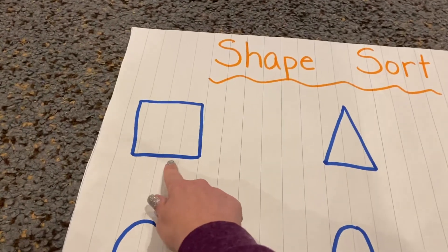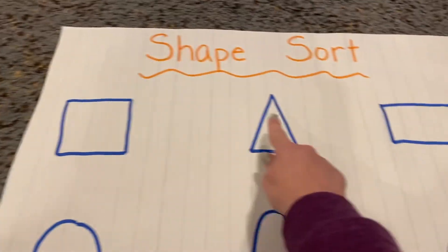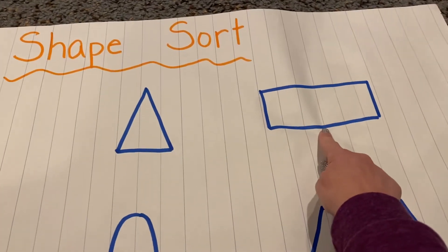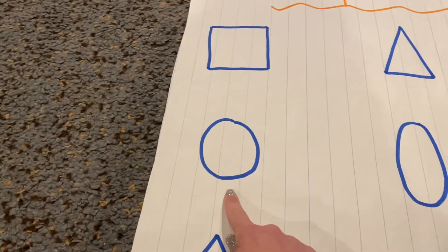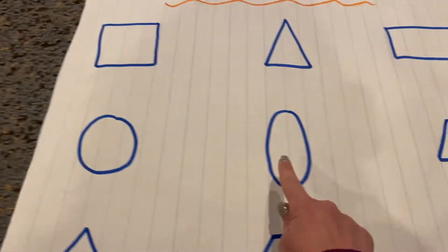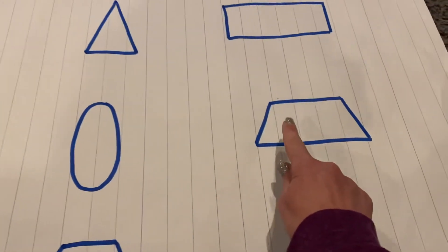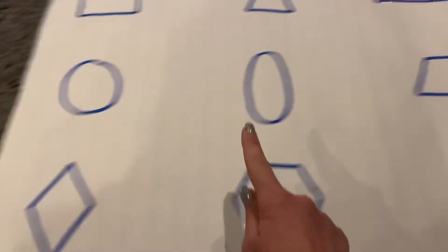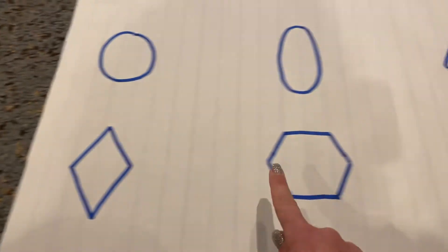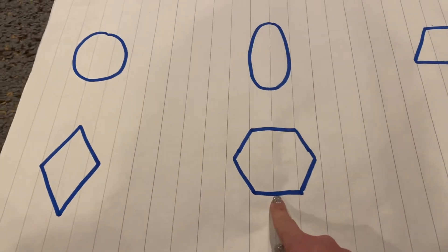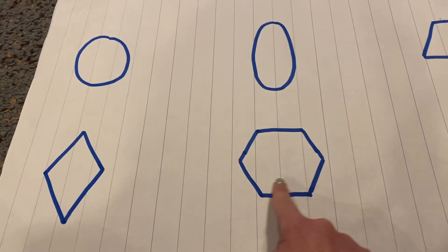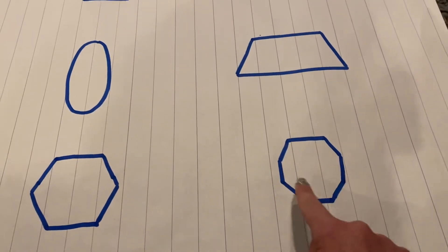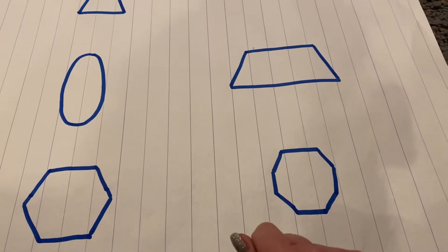This is a square, triangle, rectangle, circle, oval, trapezoid, diamond, hexagon. Remember, if it has six sides it's a hexagon. If it has eight sides it's an octagon.